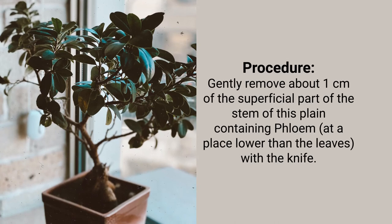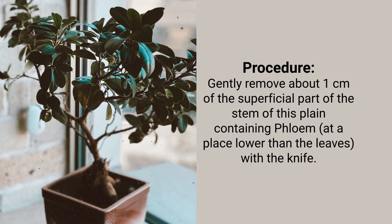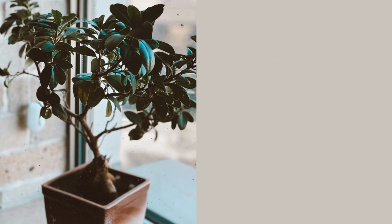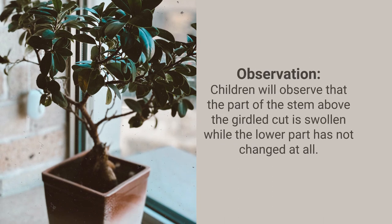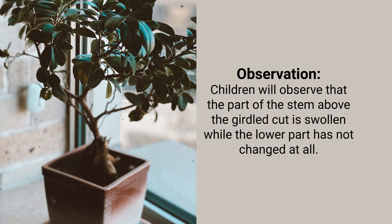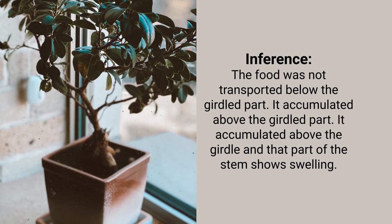ATP energy increases the osmotic pressure of the phloem tissue, causing water to move into it, and the pressure moves material to tissues with less pressure — allowing phloem to move material according to plant needs. For example, in spring, sugar stored in root or stem tissue is transported to the buds which need energy to grow. To demonstrate this, take a potted plant, and using a knife gently remove about one centimeter of the superficial part of the stem — the part containing phloem — without cutting the central xylem cylinder. Leave the plant for one week and observe: the stem above the girdled cut will be swollen while the lower part has not changed, showing that food accumulated above because it could not be transported below.